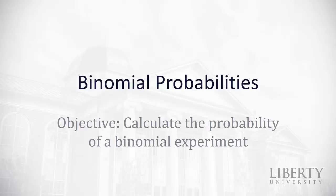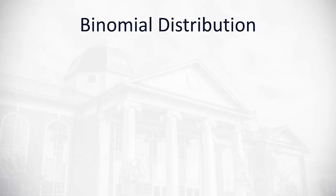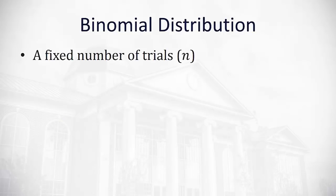A special type of discrete probability distribution is what's called a binomial probability. What we're going to do here is calculate the probabilities of a binomial experiment. First, what is a binomial distribution?